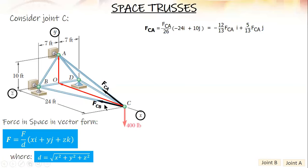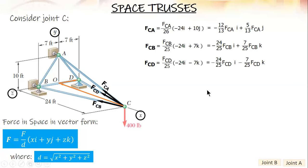Next is CB. For CB, from C you end up at B, so your movement is negative 24I plus 7K. Square root of 24 squared plus 7 squared equals 25, and then distribute. Last one is FCD. The movement from C to D is the same, but negative K. So negative 24I minus 7K divided by 25.